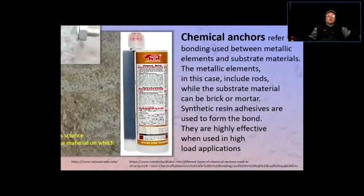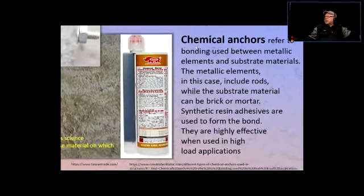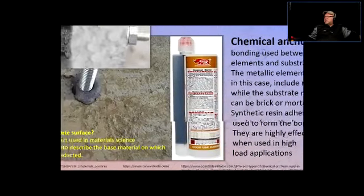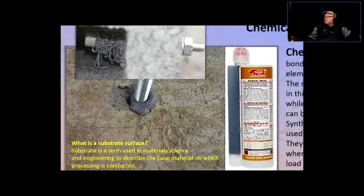In our context, the metallic element would be the anchor and the substrate would be the concrete — you're bonding metal with concrete. This is quite common when you use cinder blocks — the big gray bricks. The problem with cinder blocks is that if you use regular expansion anchors, the material is not dense enough and it will chip away and loosen up.